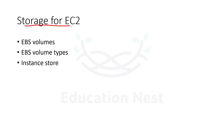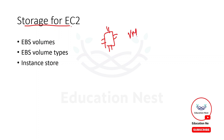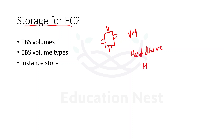The next topic is storage for EC2 instances. We have EBS volumes, EBS volume types, and instance store. EC2 is nothing but a virtual machine or virtual computer. In your laptops or computers you have storage in the form of hard drives — it can be HDD, SSD, or a combination of both. When we have virtual machines on the cloud, we also require permanent storage for them, just like hard drives on computers.